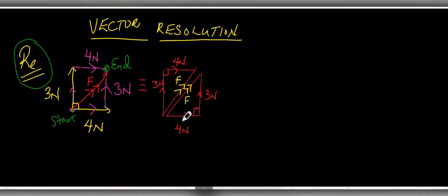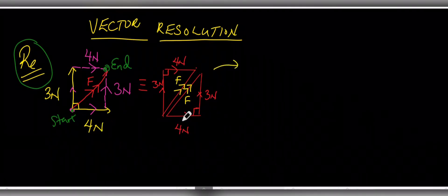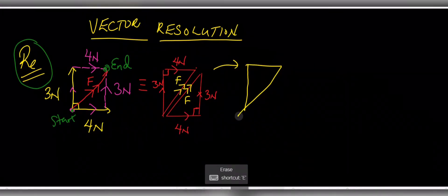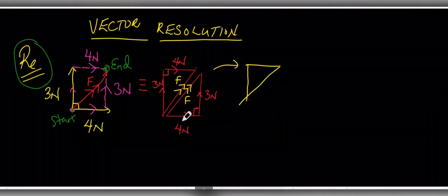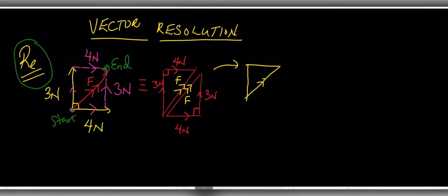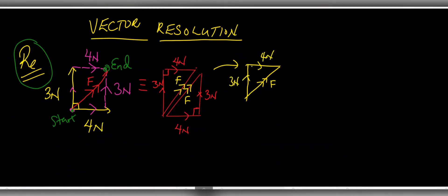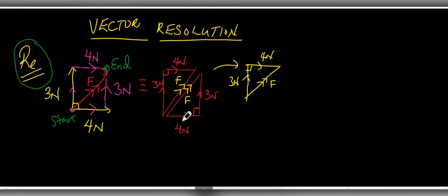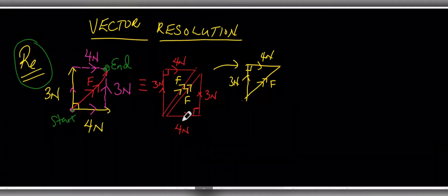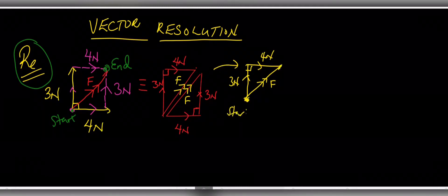Our resultant is noted with a double arrow so as not to confuse it with the equilibrant discussed previously. We can select either right-angle triangle. I'll select the first triangle — a three-newton force acting upwards, a four-newton force acting horizontally, and the resultant as the hypotenuse. Keep in mind there is a 90-degree angle between both component forces. The resultant connects the start to the end point.